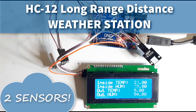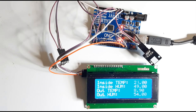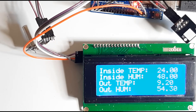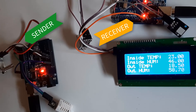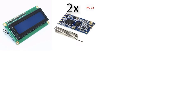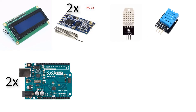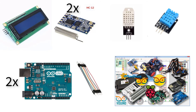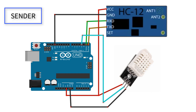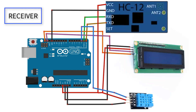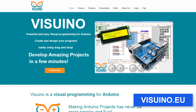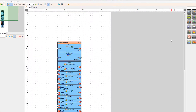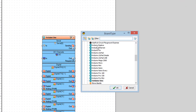In this tutorial we will learn how to make a remote long-distance weather station using two DHT sensors, HC12 modules, and the I2C LCD display. For this project you will need an I2C LCD display, two HC12 modules, two DHT sensors, two Arduinos, jumper wires, and Visuino software. Wire everything according to the schematic. Go to Visuino.eu, download and install Visuino software, start Visuino, and select the Arduino board — in our case it's Arduino Uno.